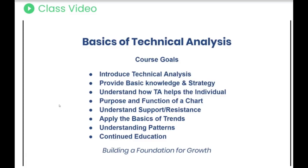We're also going to talk about the purpose and function of a chart — what is a chart, what does the information on the chart mean, and how can we use it. Continuing from that, we're going to talk about support and resistance, looking at what's happening behind the scenes at key levels. For example, why is $17 important and why is $17.25 not? What's happening at that key level that actually creates these important levels we can use to trade?